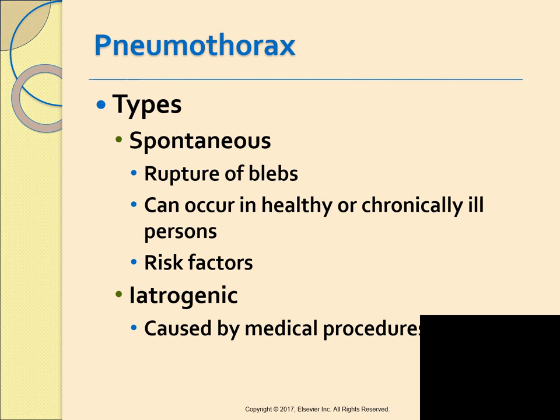A spontaneous pneumothorax occurs due to the rupture of small blebs — air-filled sacs on the surface of the lung. Healthy young individuals can have blebs as a result of lung disease like asthma, cystic fibrosis, or COPD. Smoking increases the risk for bleb formation. Other risk factors include being very tall and thin, being male, and having a previous history of spontaneous pneumothorax.